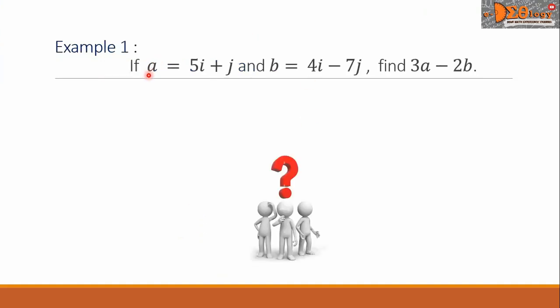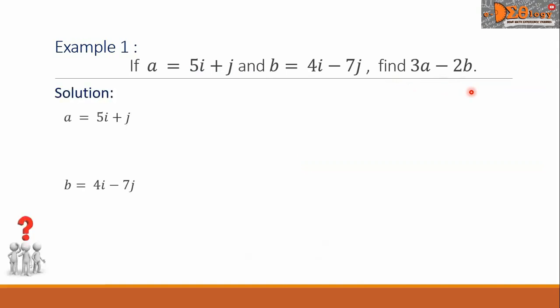Example 1. If vector A equals 5i plus j and vector B equals 4i minus 7j, find 3a minus 2b. First, let us list the corresponding vectors. Our goal here is to evaluate 3a minus 2b.